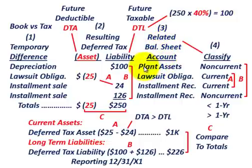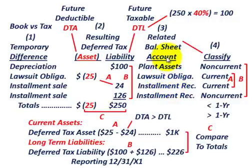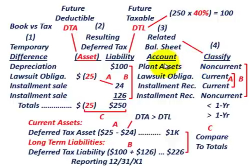Whatever that temporary difference is, you need to determine what it relates back to on the balance sheet. For example, is it a plant asset or an installment receivable? Based on the related balance sheet account, you then classify it as either non-current or current. In the case of a plant asset, it would be non-current, because it has a greater than one-year life.